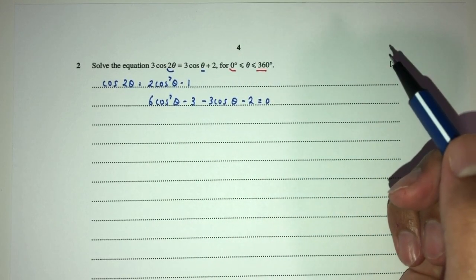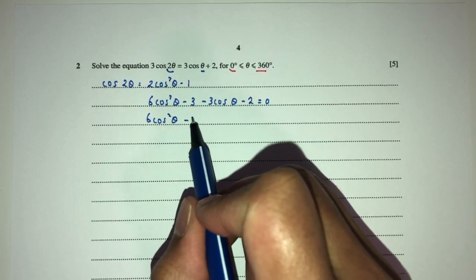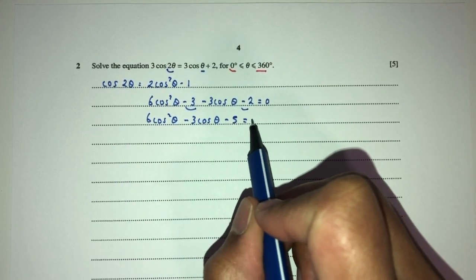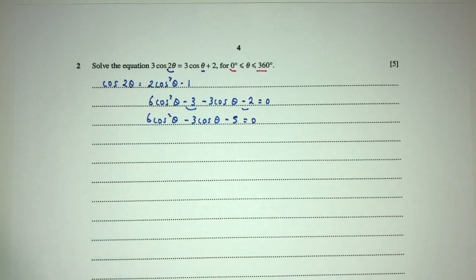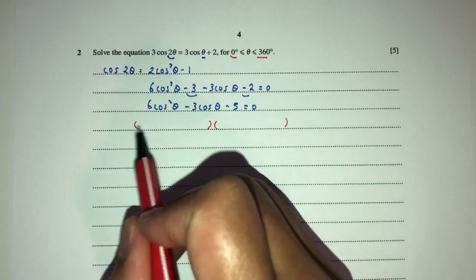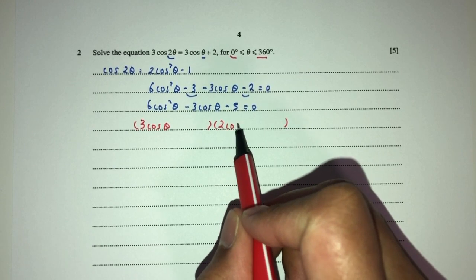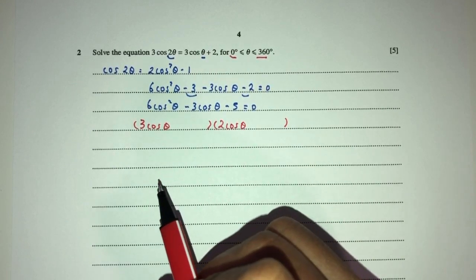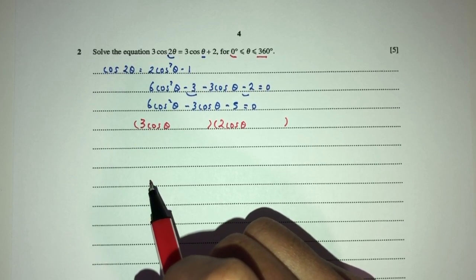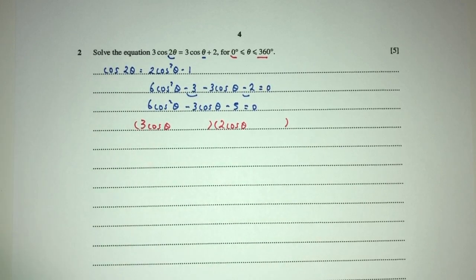Right. Now we can simplify, so you have 6 cos squared theta minus 3, minus 3 minus 2 become minus 5 is 0. Now this one is a simple quadratic equation. As you can see, we can factorize if you want to. Let's see. That will be 3 cos theta and 2 cos theta. To have the value of 3, we can try and see if that's possible or not. So from what I can see, it seems to be not possible.